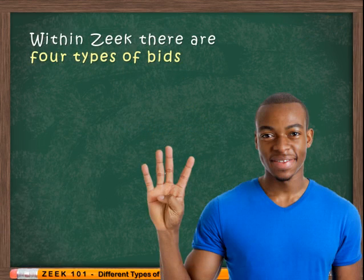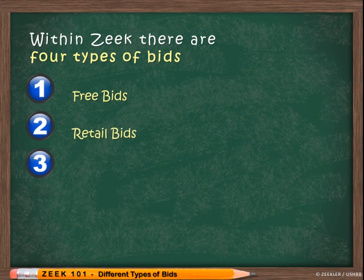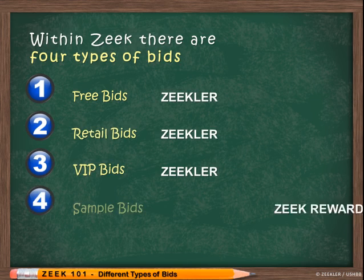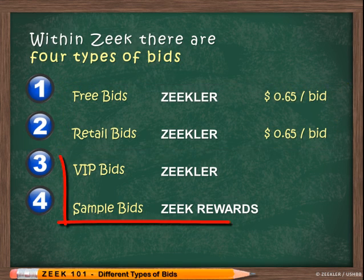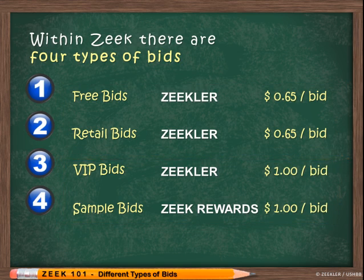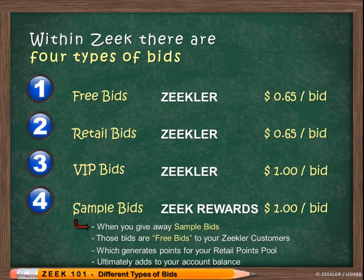Within Zeek there are four different types of bids. Three of them — Free Bids, Retail Bids, and VIP Bids — apply to Zeekler. The other bid, called Sample Bids, applies to Zeek Rewards. Free and Retail Bids are $0.65 per bid, and VIP and Sample Bids are $1 per bid. When you give away sample bids, those bids are free bids to your Zeekler customers, which generates points for your Retail Points Pool and ultimately adds to your account balance.